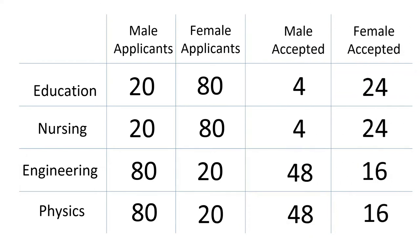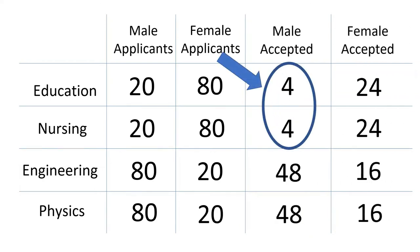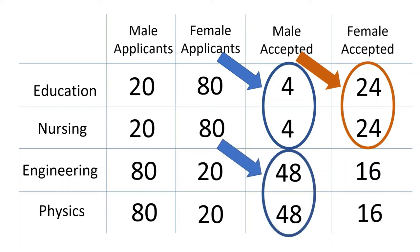Now let's look at admissions data. 20% of the men who apply to nursing and education get in, whereas 30% of the women are accepted to these same programs. For engineering and physics, men get accepted at a rate of 60%, whereas women get admitted at a rate of 80%. And thus we see that women get accepted at a higher rate than men for every one of these programs. It just seems like the opposite is true simply because women apply disproportionately to programs with lower overall acceptance rates.